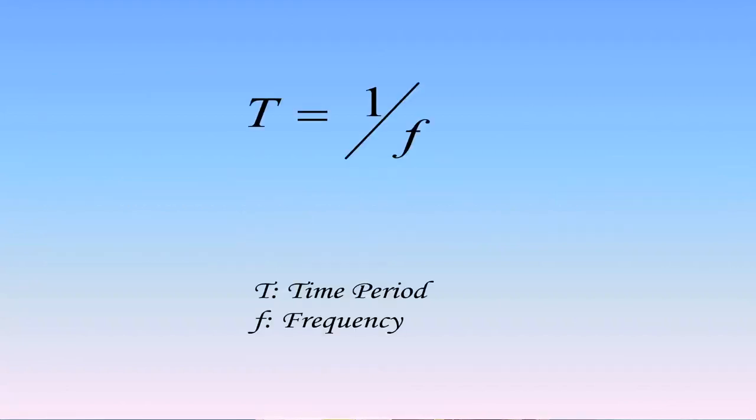Time period is inversely related to frequency. This means if the frequency is high, the time period will be low. This is understandable because frequency is the number of times a wave completes a set of up and down movements in one second. If these occur very frequently, it has to be done in a very short time. Mathematically, time period T is equal to 1 divided by f, where f is the frequency. Wavelength is the distance between two successive crests or troughs, so in one second this distance is covered a number of times given by frequency. Therefore, velocity is the product of frequency and wavelength.